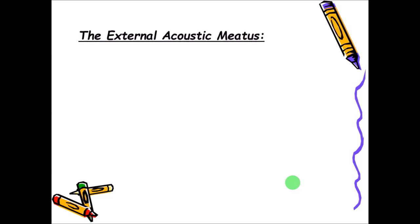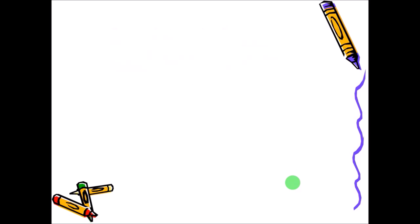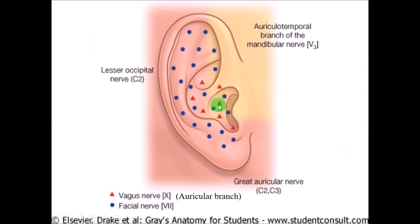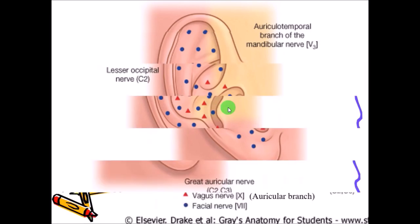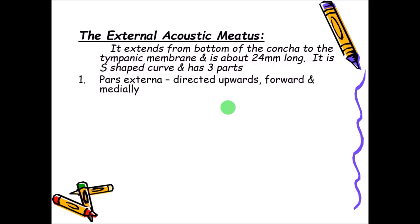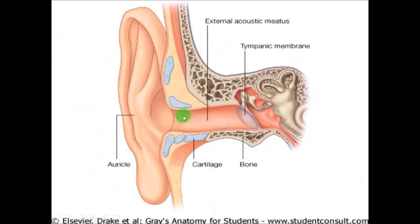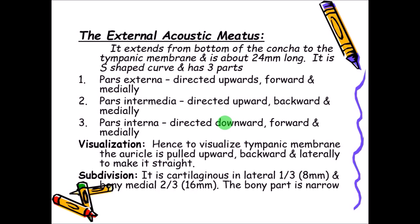Now going to the external acoustic meatus, the tube which is present. It extends from the bottom of the concha to the tympanic membrane. The total length of this tube is almost 2.4 centimeters or 24 millimeters. It is not straight but slightly curved, even though it is shown as a straight tube in diagrams for simplification.